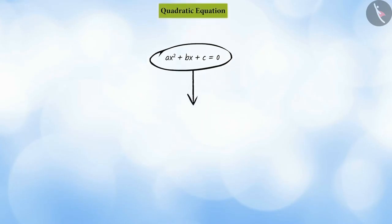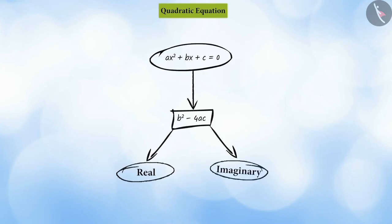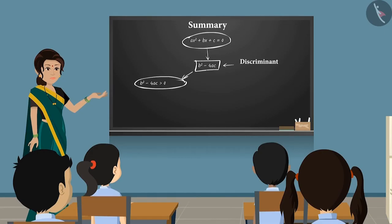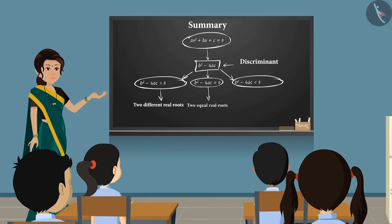You have seen that for any quadratic equation, b² - 4ac determines whether the roots of the equation are real or imaginary. Therefore, it is called the discriminant. For a quadratic equation, if the discriminant b² - 4ac is greater than zero, that is positive, then the equation will have two unequal real roots. If the discriminant is equal to zero, then the equation will have two equal real roots. If the discriminant is less than zero, that is negative, then the equation will have no real roots, or two unequal imaginary roots.